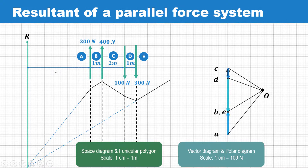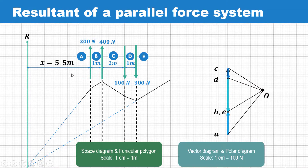We now measure the distance between the 200 Newton force and this resultant. Measuring that distance gives 5.5, so the distance X is 5.5 meters.